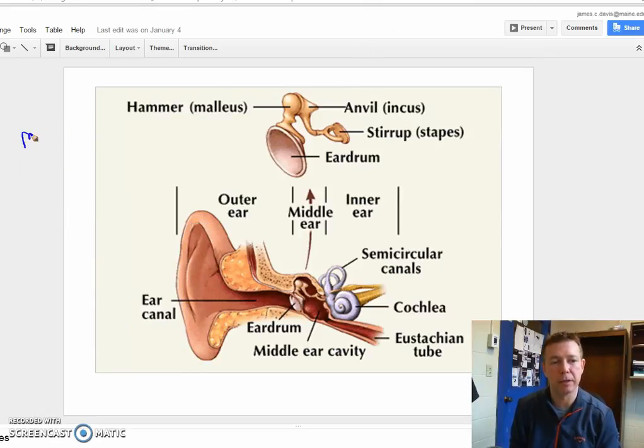The second portion is called the middle ear. The middle ear, a few things that exist within our middle ear. We first have what's known as the middle ear cavity or the tympanic cavity.